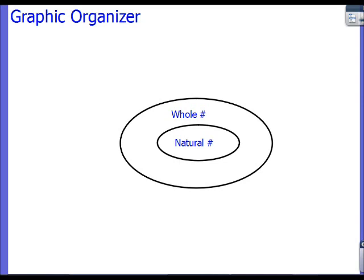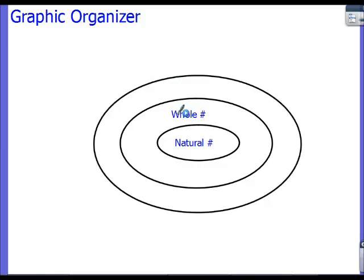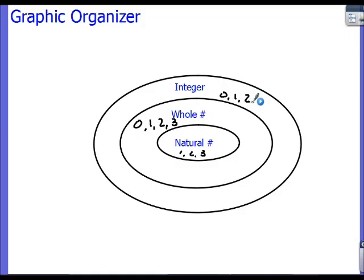Looking at our graphic organizer again: all natural numbers are whole numbers. Now we can add that all whole numbers are integers. All whole numbers are integers, and all natural numbers are integers, because those circles are located inside the integer circle. Whole numbers can be zero, one, two, three, and integers can have zero, one, two, and three as well — but the difference is integers can also have negatives. If a circle is contained inside another circle, it fits into that subset.